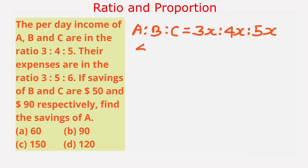Thus, income of B is 4x minus saving of B which is $50, and income of C is 5x minus saving of C which is $90. So we write (4x - 50)/(5x - 90), and their expenses are in the ratio 5:6.